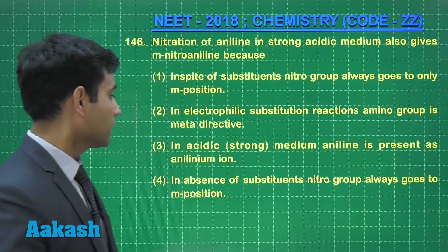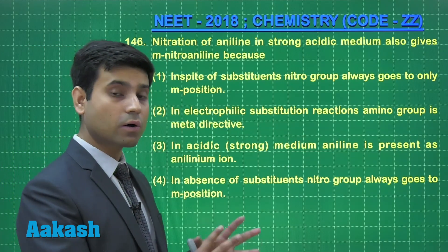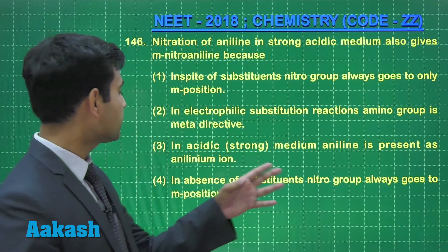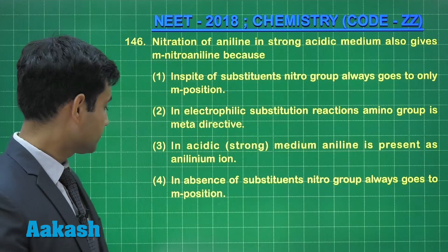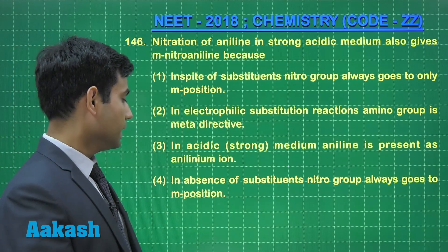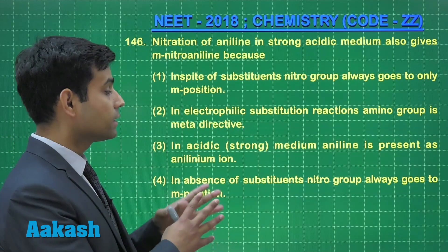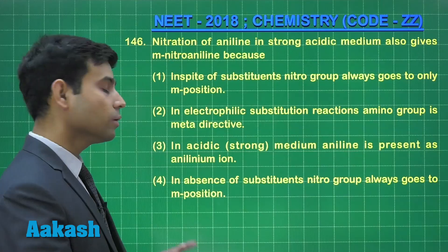Next is in acidic, that is strongly acidic medium, aniline is present as anilinium ion. Fourth option is in absence of substituents nitro group always goes to meta position.